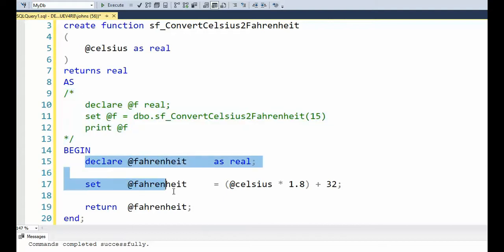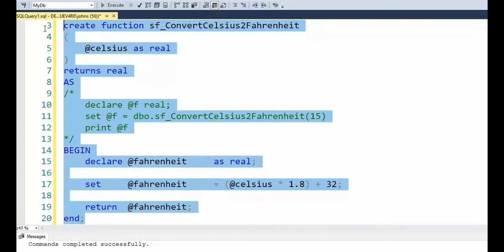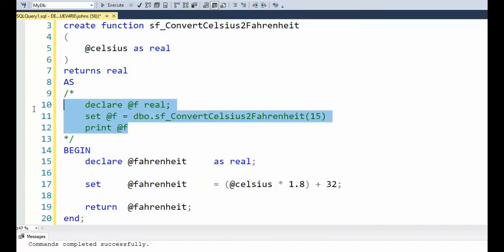And then here's our actual function. Notice we say return at Fahrenheit. Fahrenheit is defined as real and the return value is real. Let's execute this. This has been executed. And then we can actually execute this code on lines 10 to 12. And notice the value is 59. Excellent.